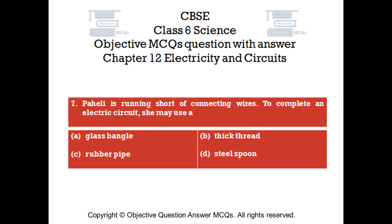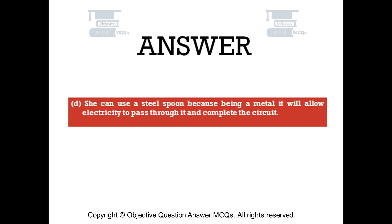Question number 7. Paheli is running short of connecting wires. To complete an electric circuit, she may use: Option A — a glass bangle; Option B — thick thread; Option C — a rubber pipe; Option D — a steel spoon. The right answer is option D. She can use a steel spoon because, being a metal, it will allow electricity to pass through it and complete the circuit.